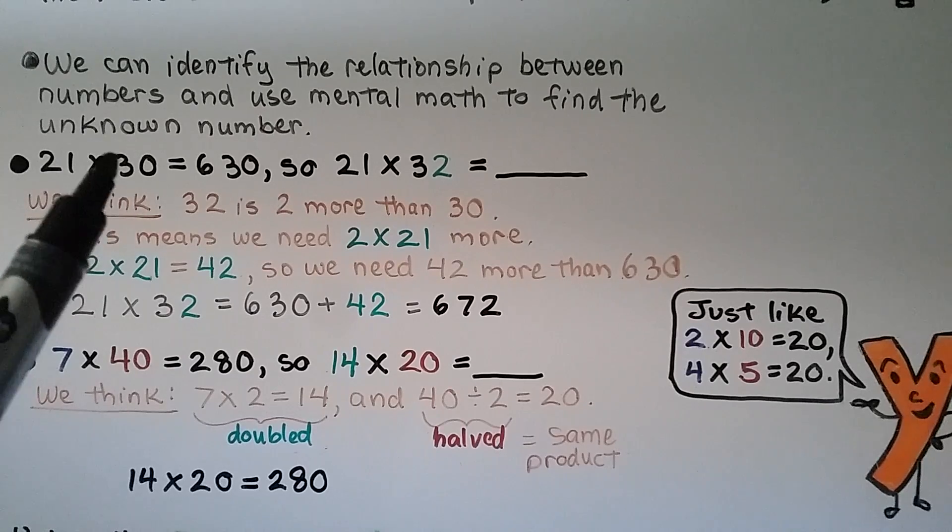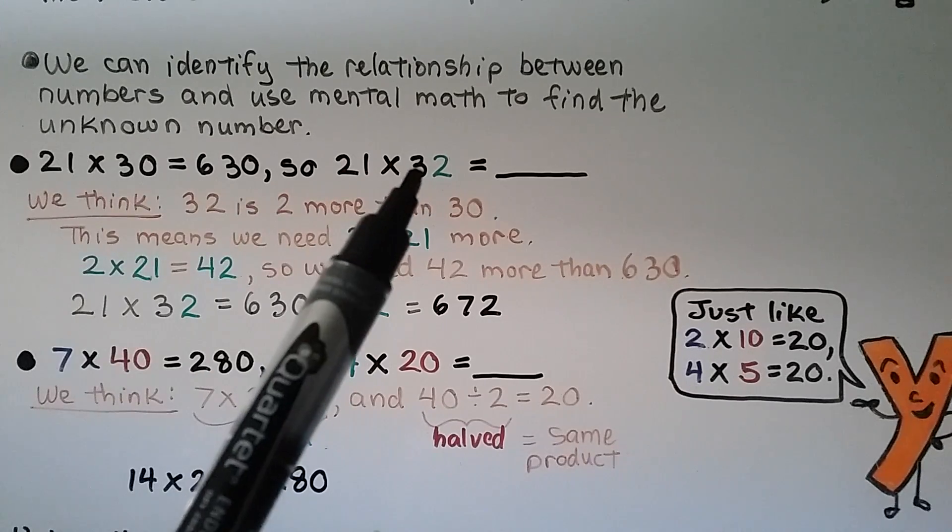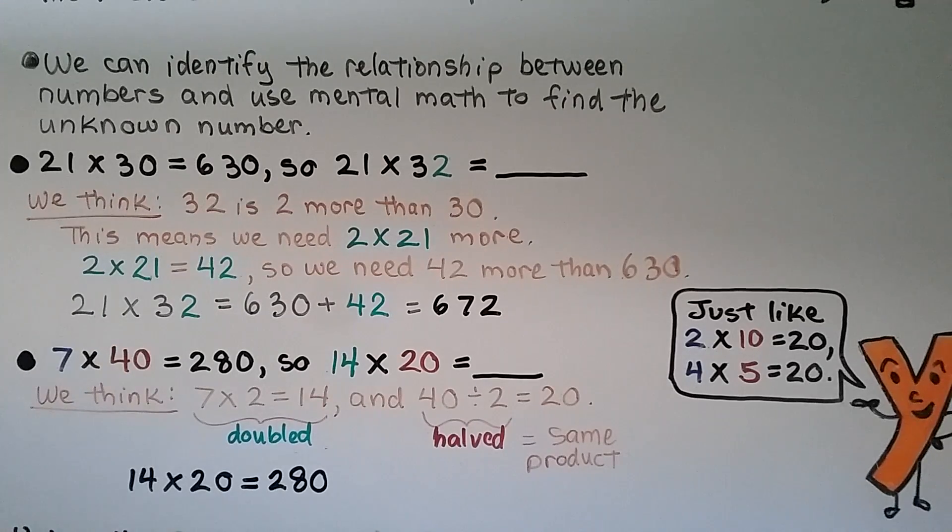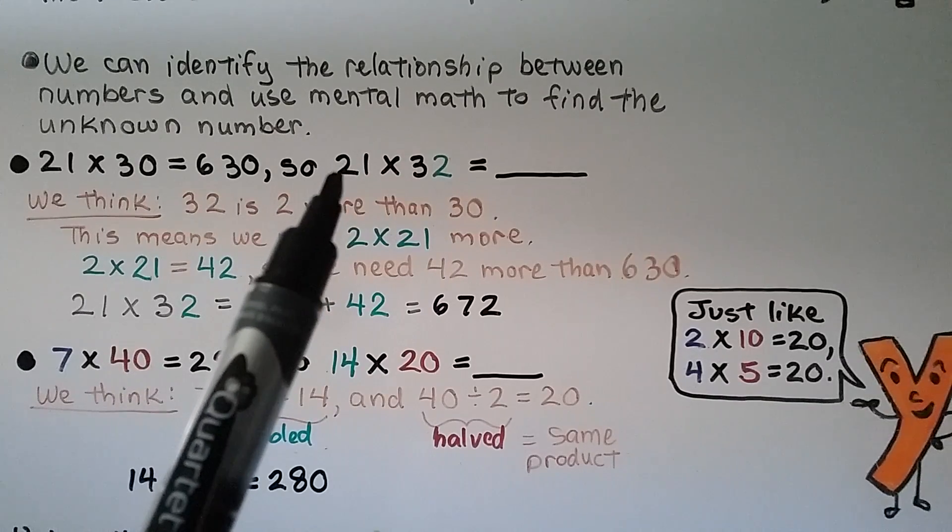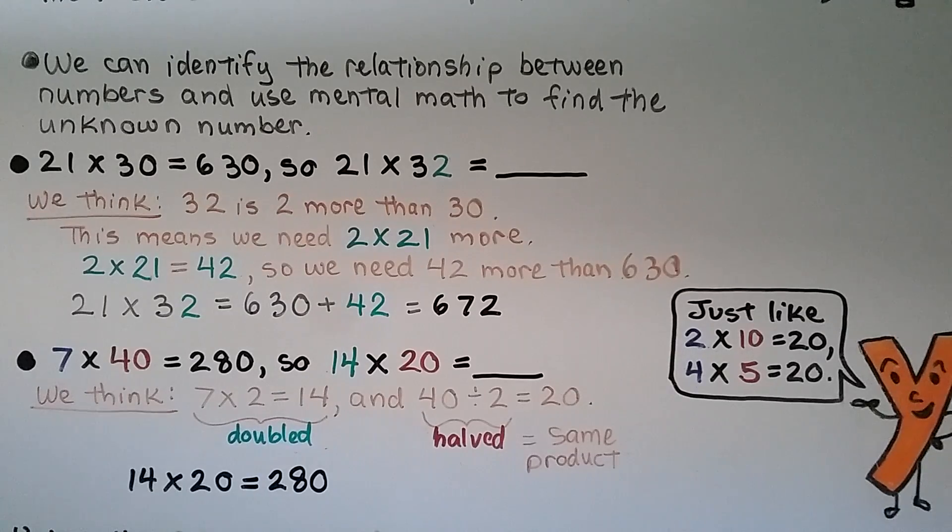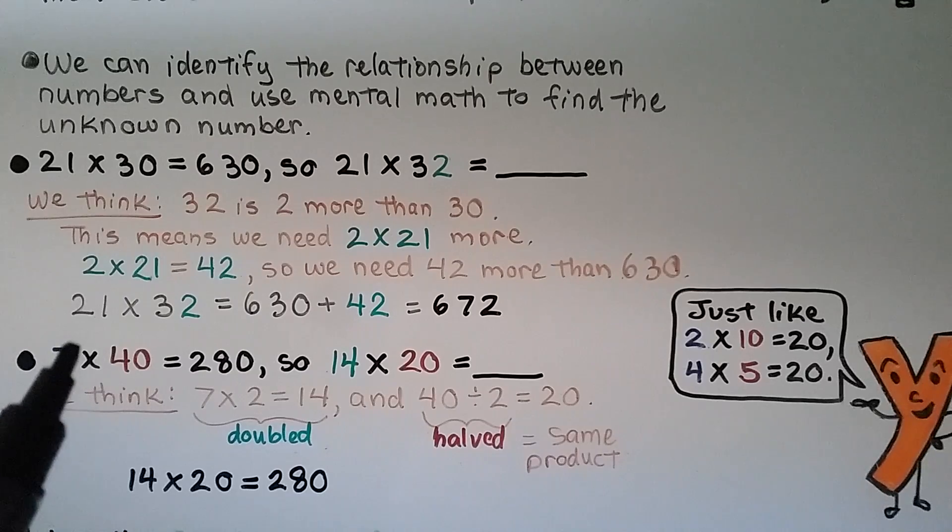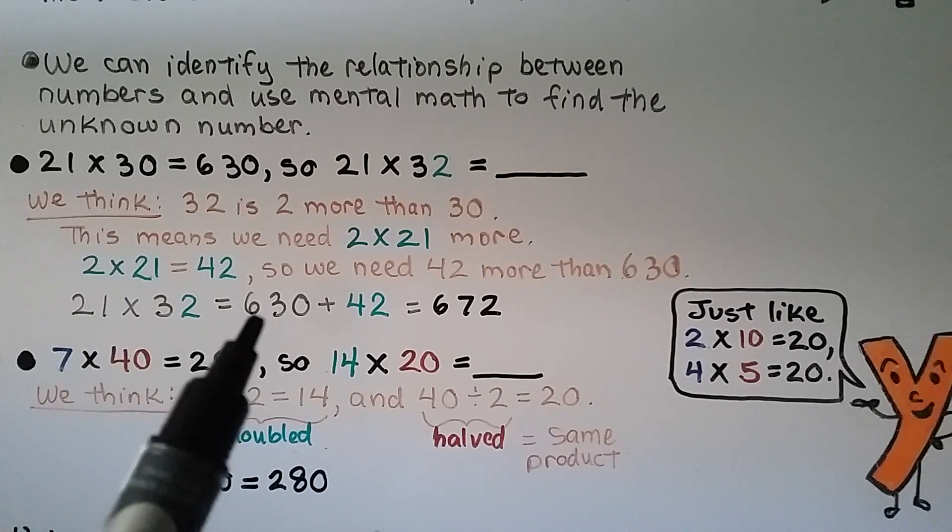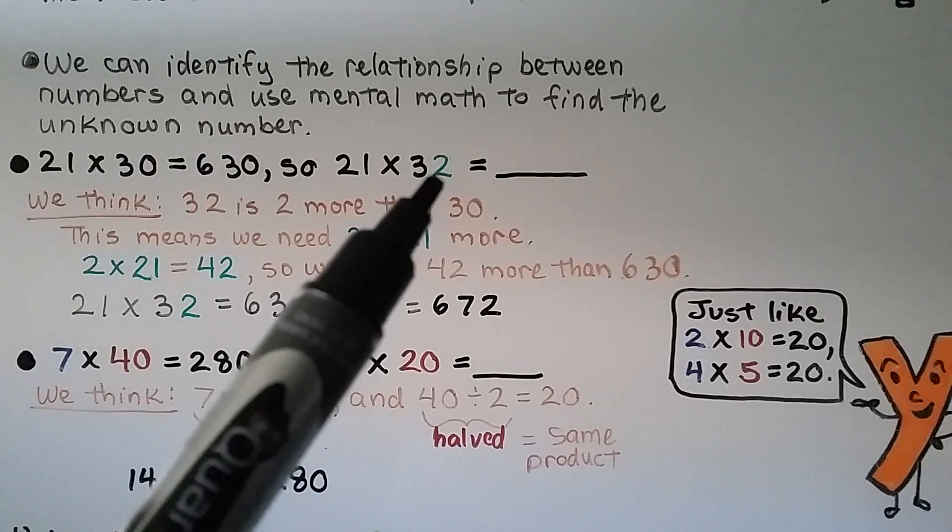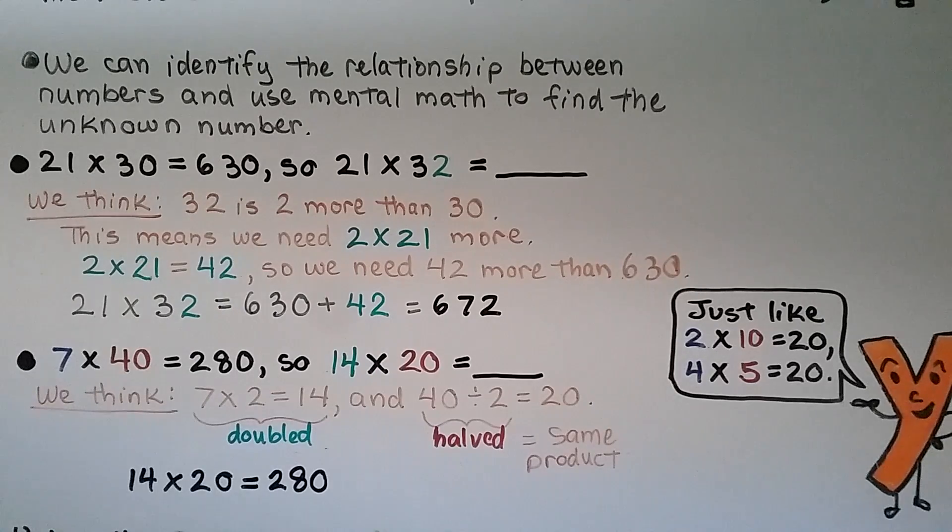Here we have 21 times 30 is equal to 630. So 21 times 32. Notice that was 30 and now it's 32. What would that equal? What would be the unknown number? So we think 32 is two more than that 30. This means we need two times 21 more because we had three tens times the 21. Now we have three tens and two ones times the 21. Two times 21 is equal to 42. So we need 42 more than 630. So 21 times 32 is equal to 630 plus the 42.